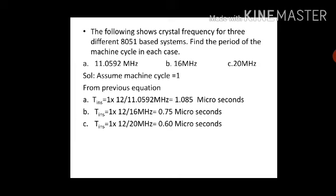From the equation: T_INST = C × 12 / crystal_frequency. For case A, crystal frequency is 11.0592 MHz: T = 1 × 12 / 11.0592 MHz = 1.085 microseconds. This means an instruction with the given frequency of 11.0592 MHz consumes 1.085 microseconds.